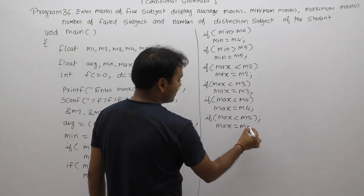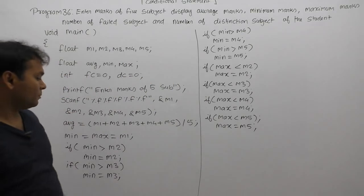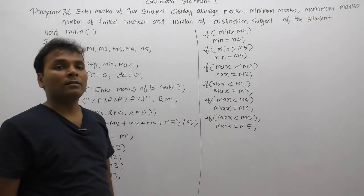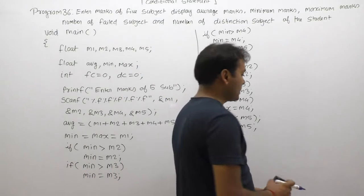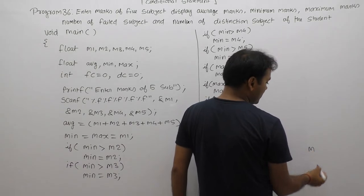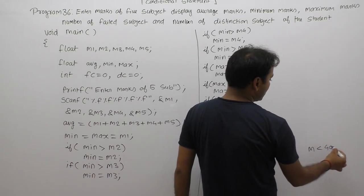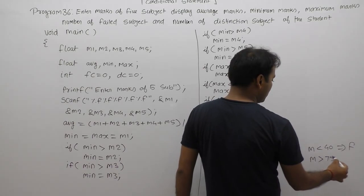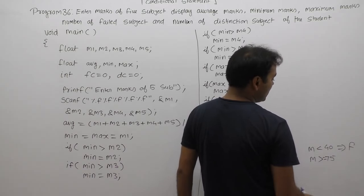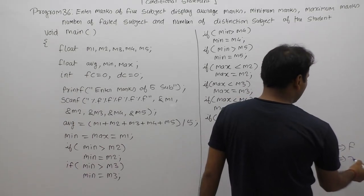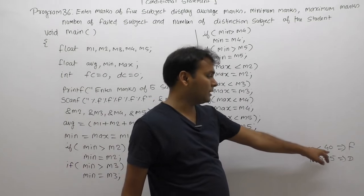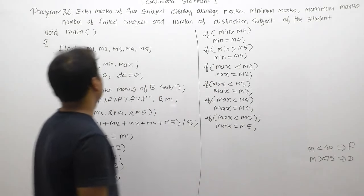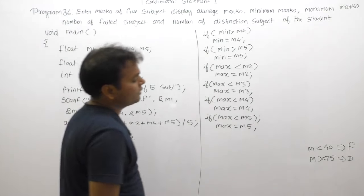By this point we have three possible values: average marks, minimum marks, and maximum marks. Next, count the number of failed subjects and number of distinctions. For failed subjects: if marks of any subject are less than 40, that subject is considered failed. For distinctions: if marks are greater than or equal to 75, that is a distinction. Count is incremented using FC++ for failed count.